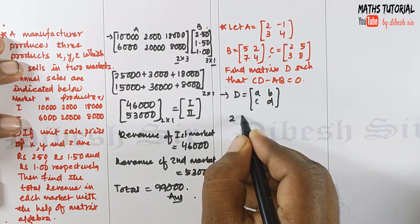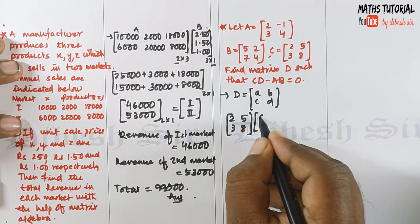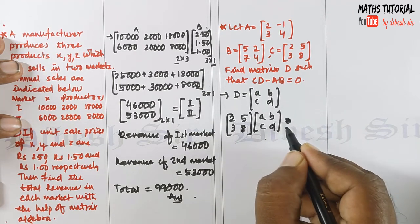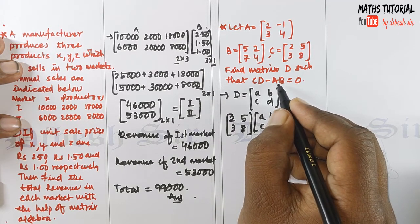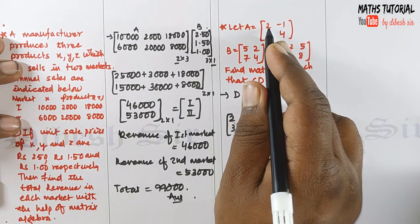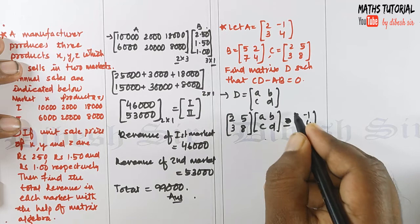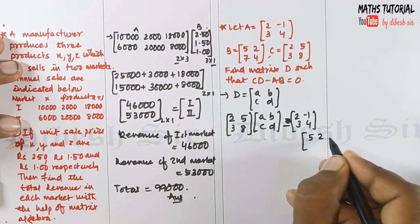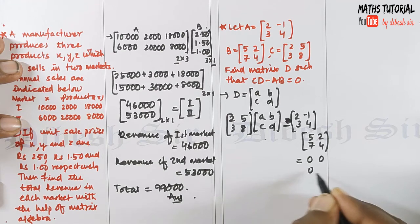C is the matrix [2, 5; 3, 8] and D is [A, B; C, D], set equal to negative AB. AB is the matrix [2, 2; -1, 3] multiplied by [4; 5, 2; 7, 4], equal to the zero matrix O which is [0, 0; 0, 0]. So we proceed to multiply these matrices.